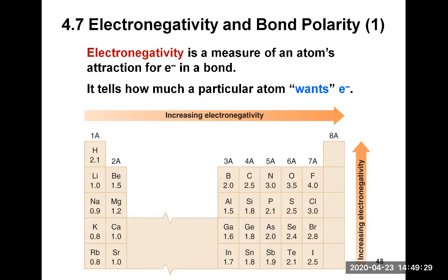Electronegativity varies according to the periodic table. Going from left to right, electronegativity increases, and going from bottom to top, it increases. The values range from 0.8 for rubidium in the lower left corner, all the way up to 4.0 for fluorine in the upper right corner.